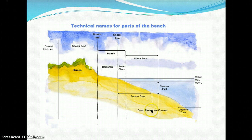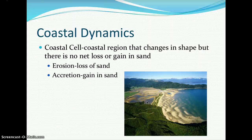A coastal cell is a coastal region that changes in shape but with no net loss or gain in sand, due to the balance of erosion — loss of sand — and accretion — gain in sand — at that coastal cell.